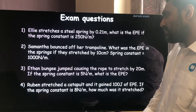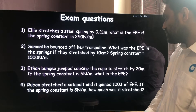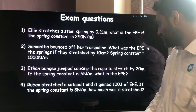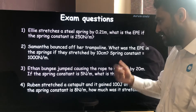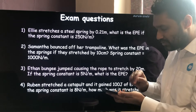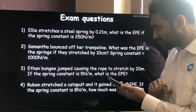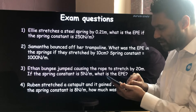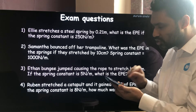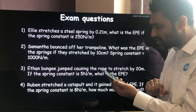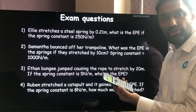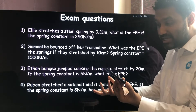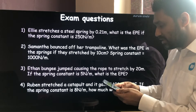Question three: Ethan bungee jumped, causing the rope to stretch by 20 metres. If the spring constant is 5 newtons per metre, what is the EPE? EPE equals 0.5 times 5 times 20 squared, which equals 1,000 joules — or 1 kilojoule. Straightforward: just plug the numbers directly into the formula.